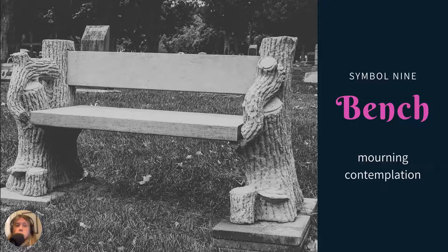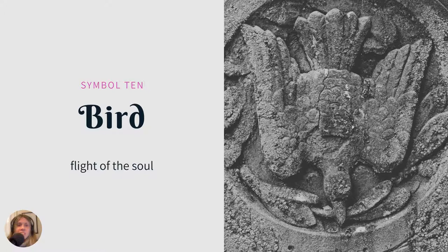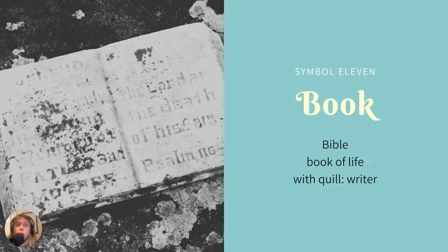This tombstone is a bench, inviting the person to stop and mourn or contemplate. Here's a bird — we'll go into the dove specifically. This looks like it might be a dove, only because it has an olive branch in its mouth. But a bird generally represents the flight of the soul.